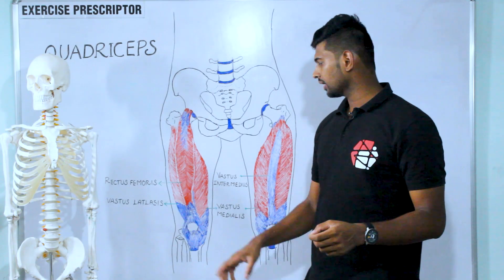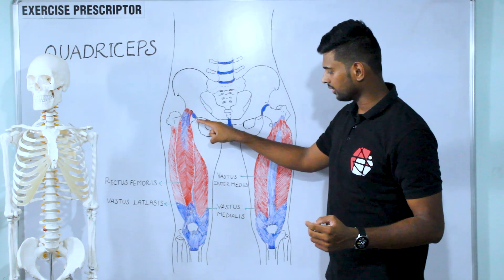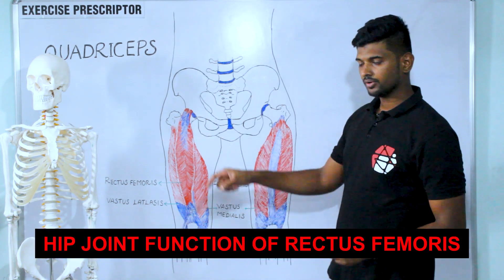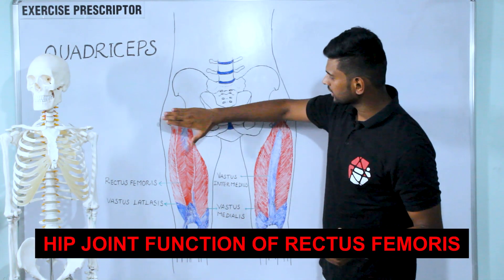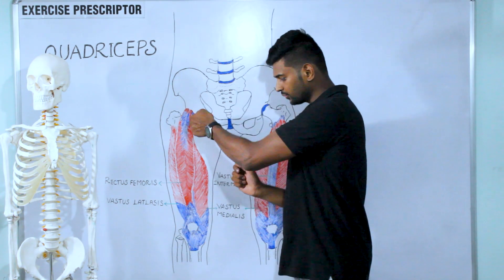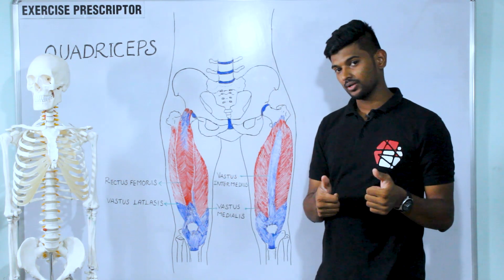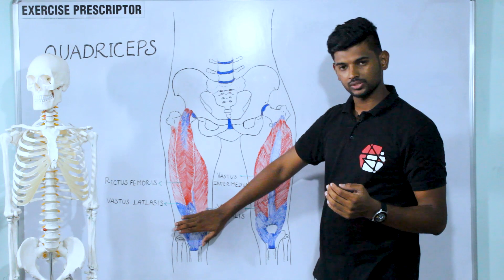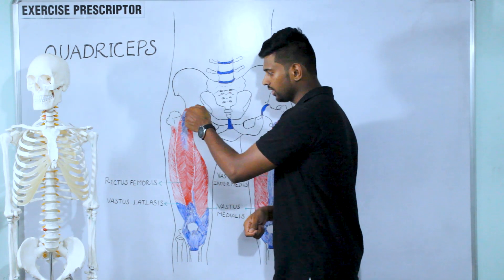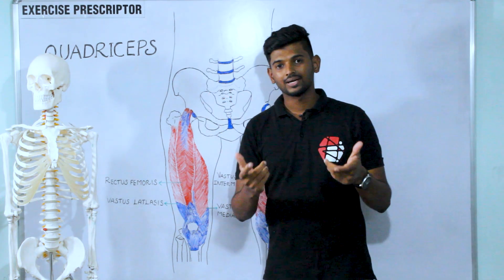As mentioned, rectus femoris is the only two-joint muscle, also crossing the hip joint. At the hip joint, if the proximal attachment (origin) is fixed and the insertion moves towards the origin, the fibers are pulled to help flex the hip joint. If the insertion is fixed and the origin moves towards the insertion — at the anterior inferior iliac spine — it pulls in a downward manner, creating anterior pelvic tilt.